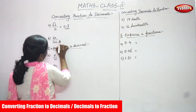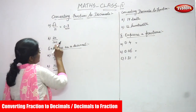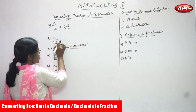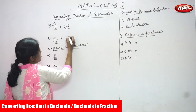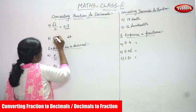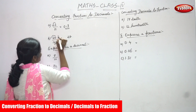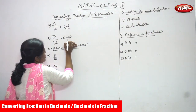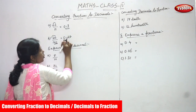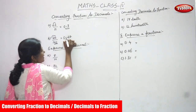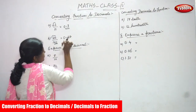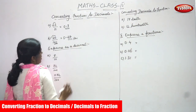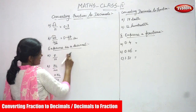Next one is 24 by 100. 24 is the numerator and 100 is the denominator. How many zeros in the denominator? Two zeros. So you have to move two points. You write 2, 4 — move the point two places — then put 0 before the point. The answer is 0.24. This expresses a decimal.